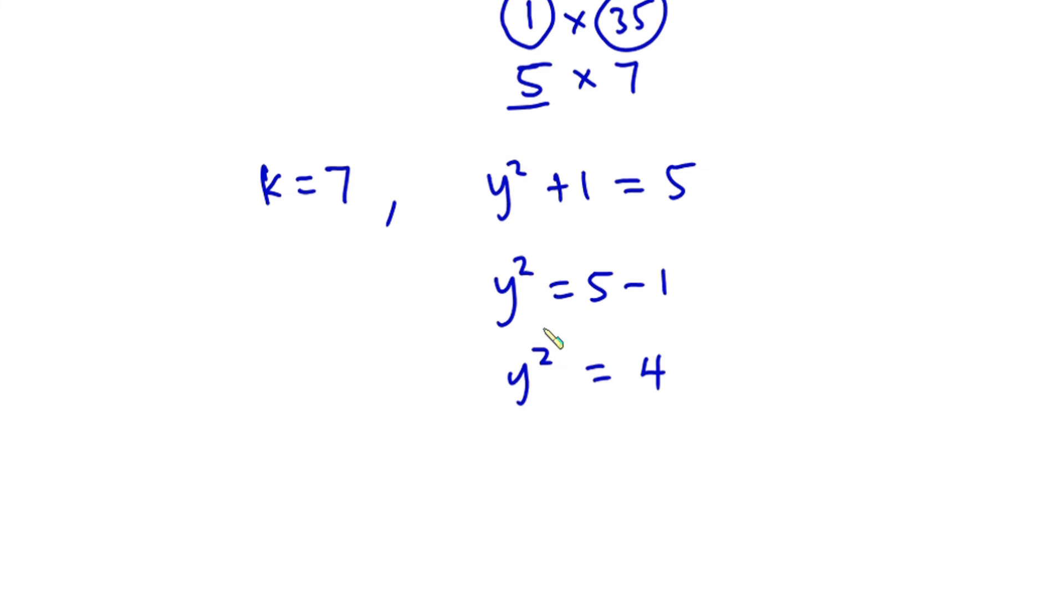Now we want y, so let's take square root on both sides. We have plus or minus here, so y equals plus or minus 2. But remember from the question, y is a positive integer, so y equals 2.